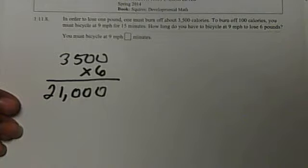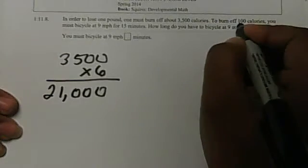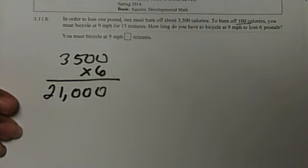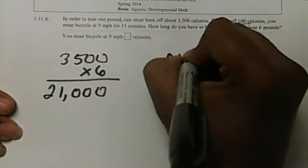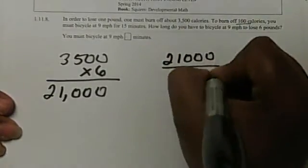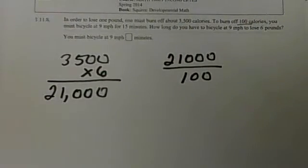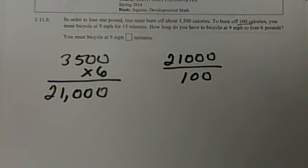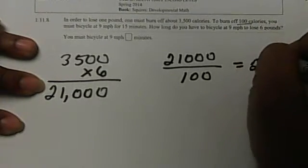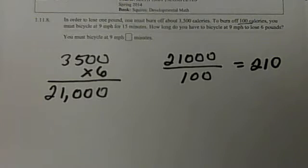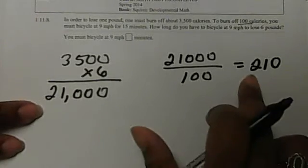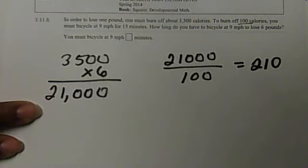But we're going to burn these calories in 100 calorie increments. To see how many sets do we have to use, if we take our 21,000 and divide that by 100, we'll find out how many sets we need. We need 210.